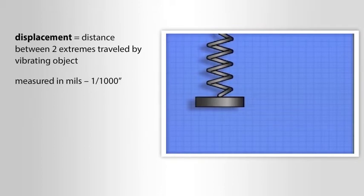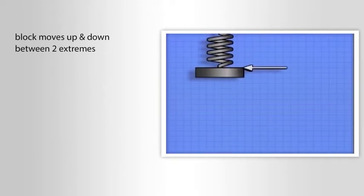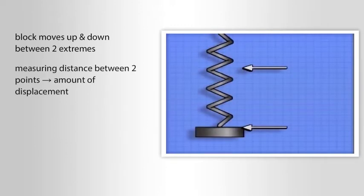When the block in the model moves up and down, it travels between two extremes, from point A to point B. By measuring the distance between those two points, the amount of displacement can be found.